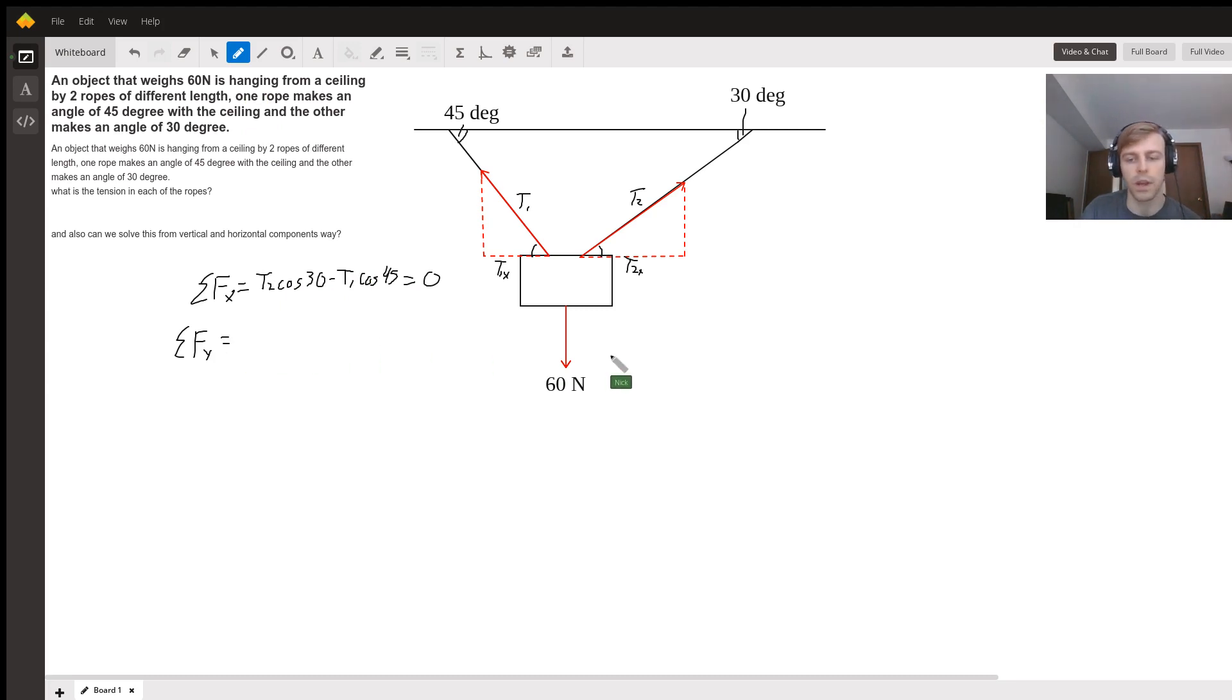Now for the sum of forces in the y, we have our downward 60 newtons. We also have the upward portions here, which is T1y and T2y.